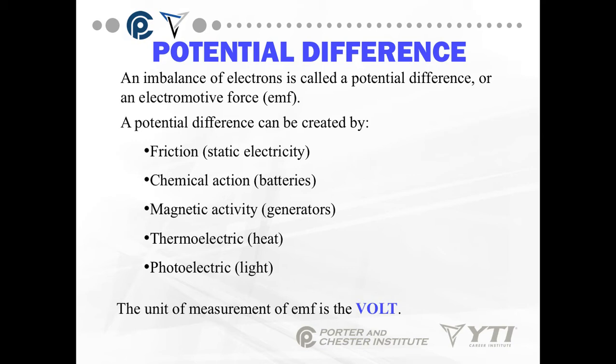A potential difference between the electron and the proton can be caused by friction, which is static electricity — like rubbing your feet on a carpet in the middle of winter and then touching something metal and getting a little spark. Chemical action, which is what's found in batteries. Magnetic activities, which is what's found in generators.